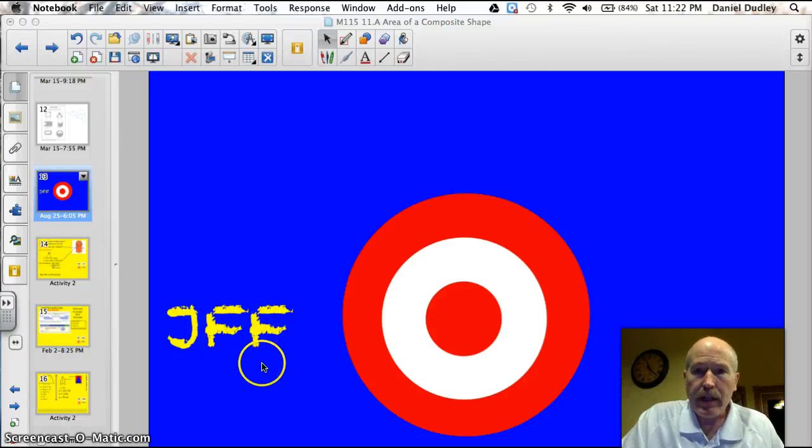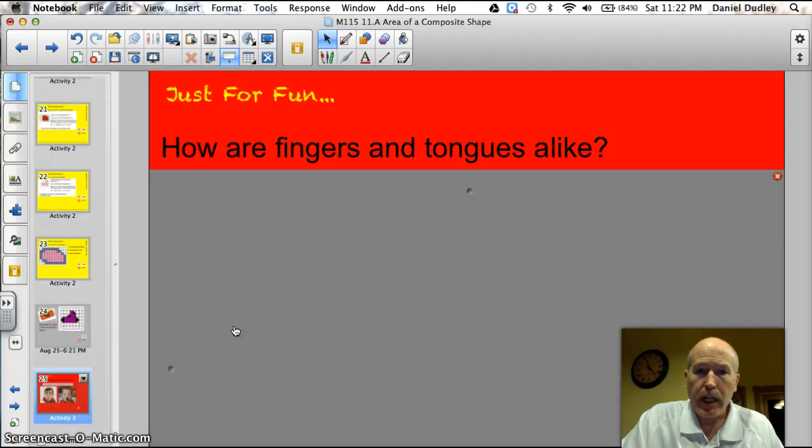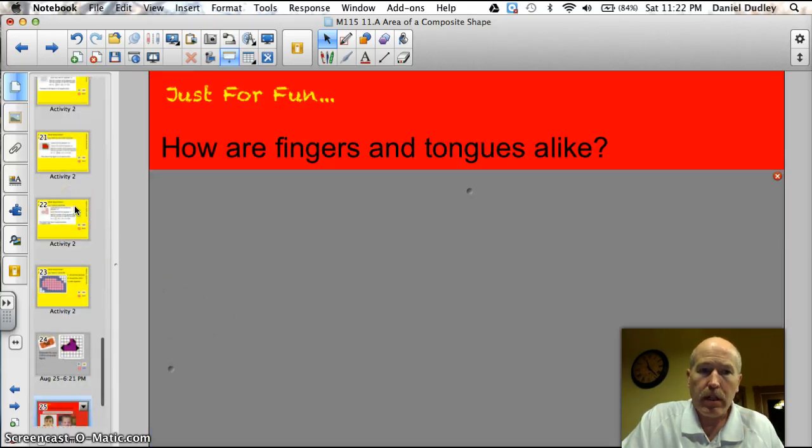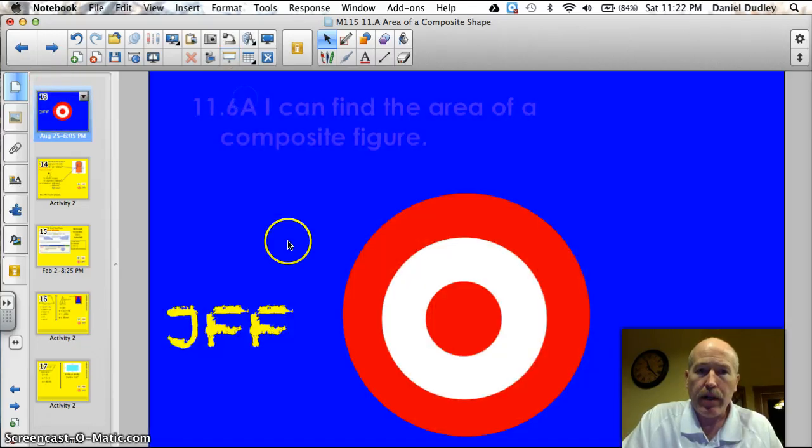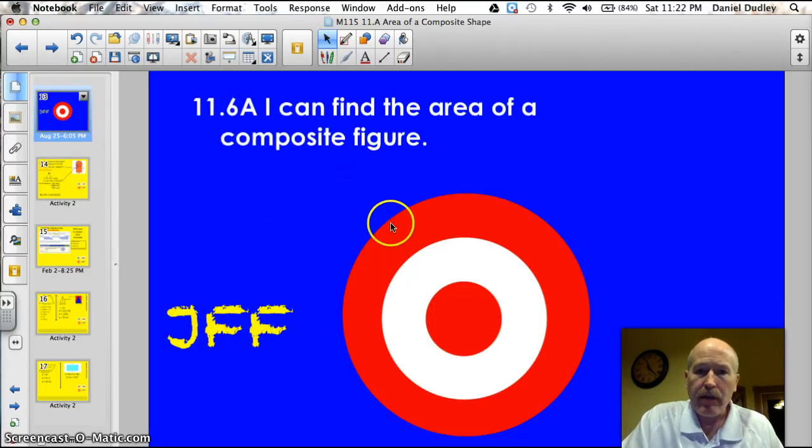Hey Valley Kids, tonight we're going to work on finding the area of composite shapes. Let's start off with something fun though. Our trivia question tonight, kind of quirky, how are fingers and tongues alike? We'll get back to that at the end of the video. Tonight we're going to get right into it and work on finding the area of a composite figure. Let's do this thing.